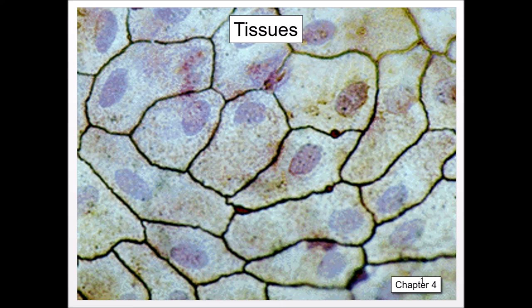Tell me about nervous tissue. Tell me what makes nervous tissue special. Tell me about the projections off of nervous tissue and what makes them special. What's an axon? What's a dendrite? What do they do? What are neuroglial cells and how do they play a role?